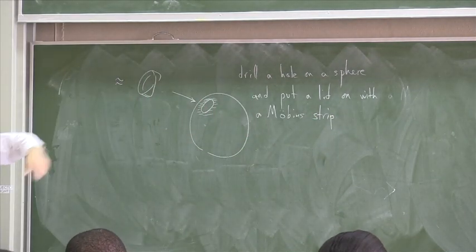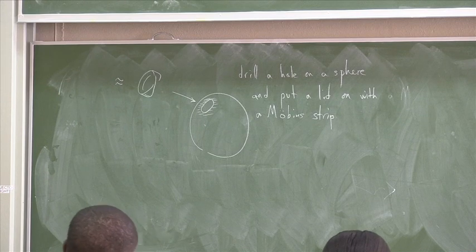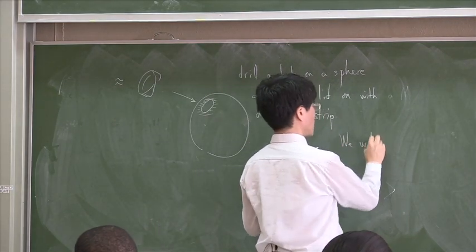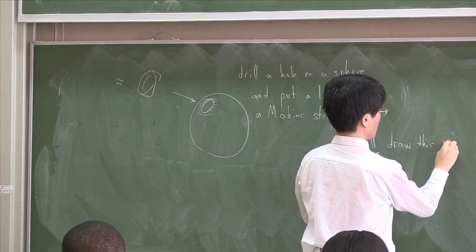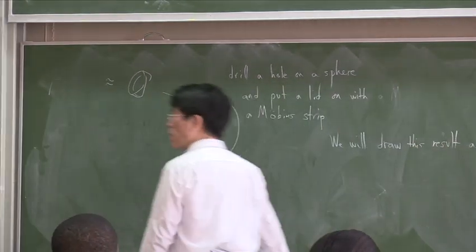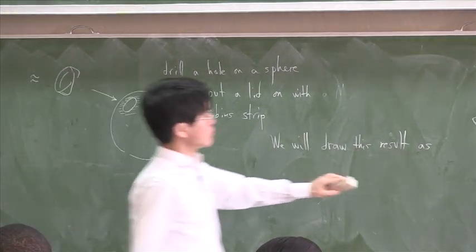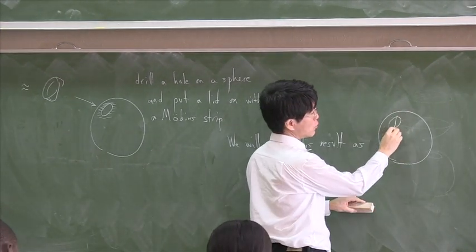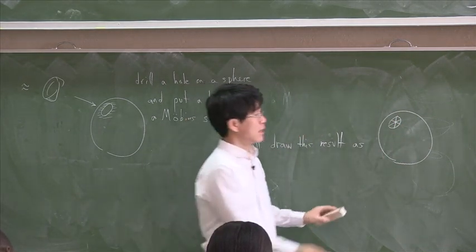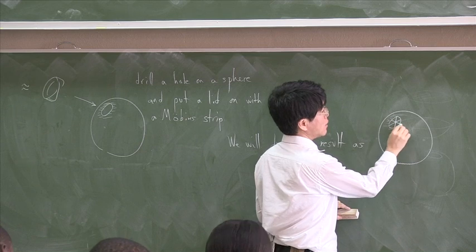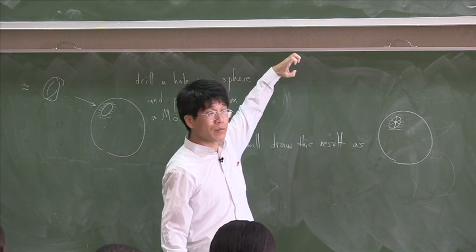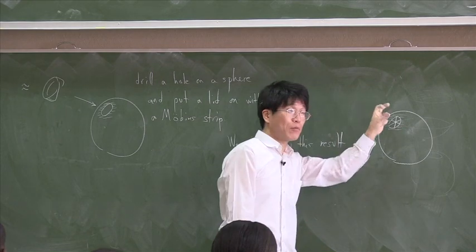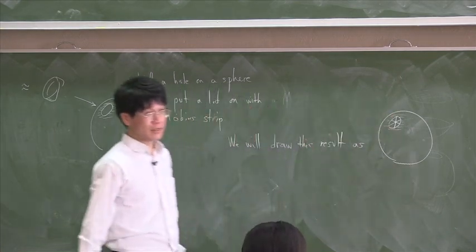Again, it's impossible to do it in 3D, but you can do this. So, drill a hole on a sphere and put a lid on with a Möbius strip. This is what results if you make those identifications that we're discussing in the beginning. We will draw this result. Well, there is no good way to draw it, so I shall take a very simple picture. I'm going to put a circle and then put something like this. So, whenever you see this picture, it means drill out the hole, but put the lid back on, not with the ordinary lid, but with a Möbius strip. Glue back a Möbius strip on the hole and the result is drawn like this.